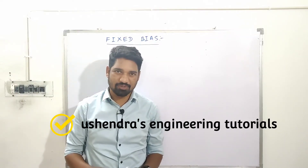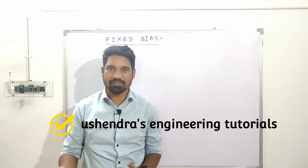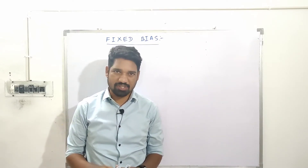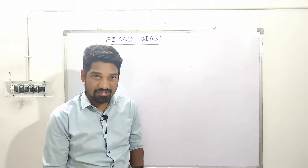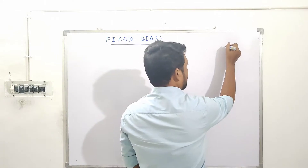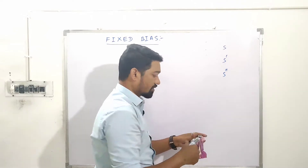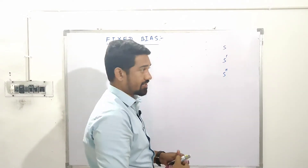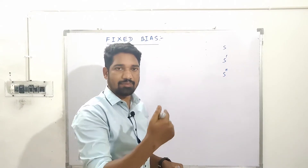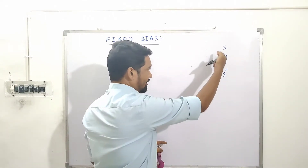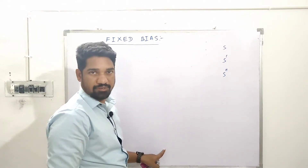Yet another important video from the course electronic devices and circuits, still yet another important topic. It's all about some important discussion and derivation about fixed bias. From an exam point of view, questions will ask you to derive expressions for S, S dash, and S double dash — the various stability factors as far as fixed bias is concerned. It may also be asked to establish a relationship between S, S dash, and S double dash, and then conclude something from the final derivation.